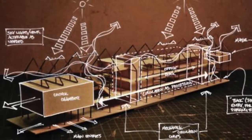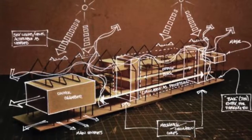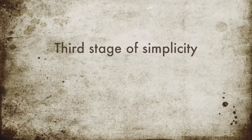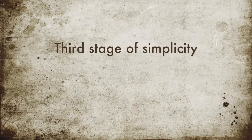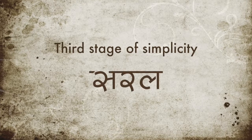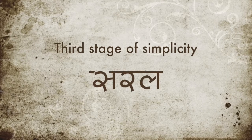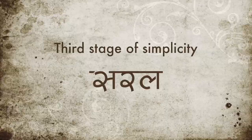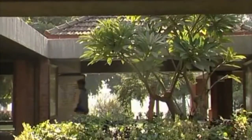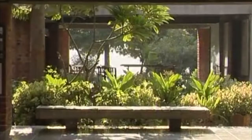With all these we can improve design and achieve simplicity. The third stage of simplicity is sarala — straight, simple, not crooked or bent, having a constant direction throughout its length.